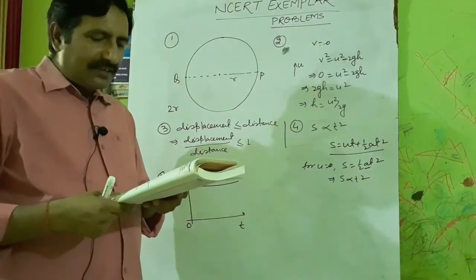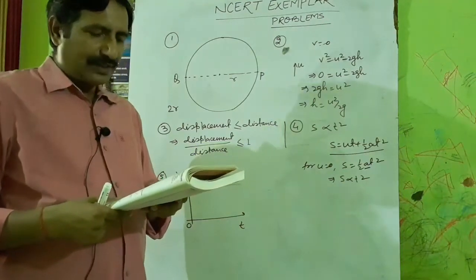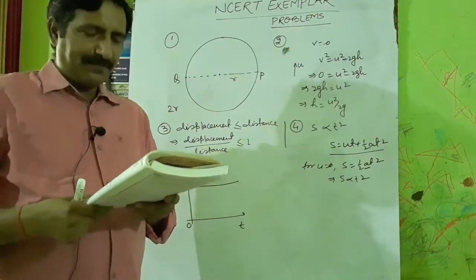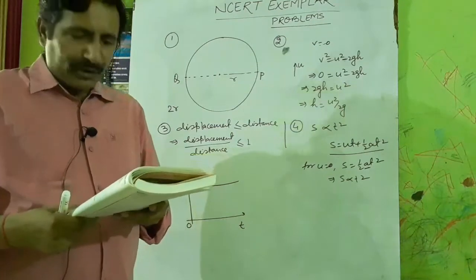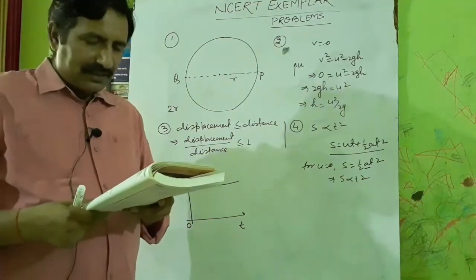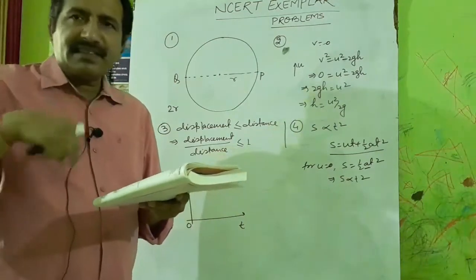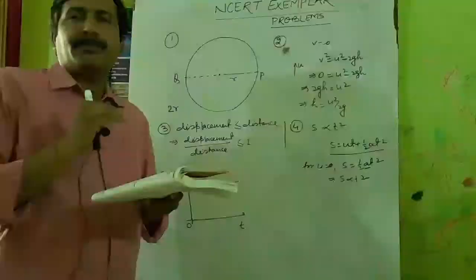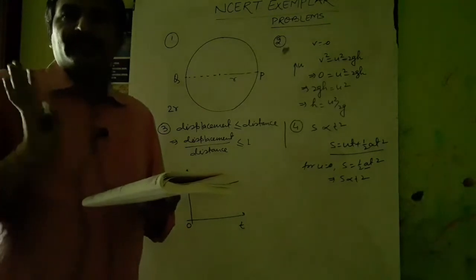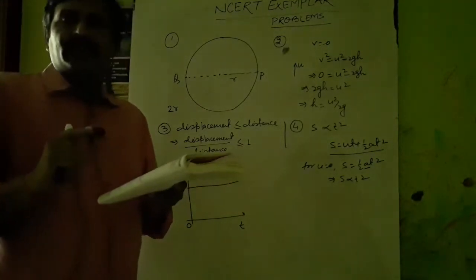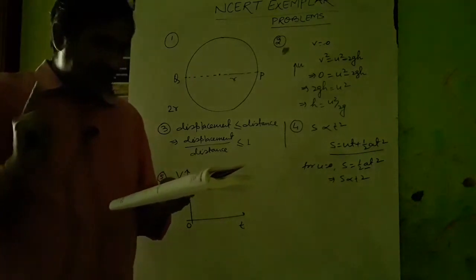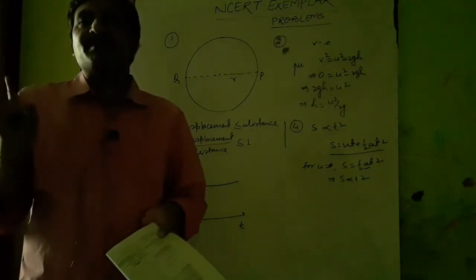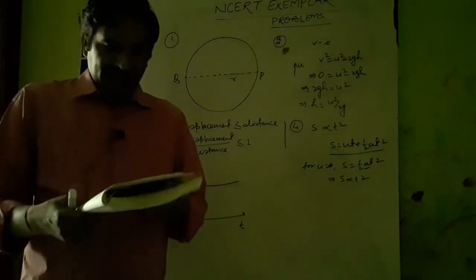Question six: A boy is enjoying a ride on a merry-go-round moving at a constant speed of 10 m/s. Options: at rest, moving with no acceleration, in accelerated motion, or moving with uniform velocity. A merry-go-round involves circular motion. In uniform circular motion there is centripetal acceleration, so the boy is in accelerated motion.